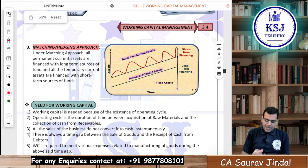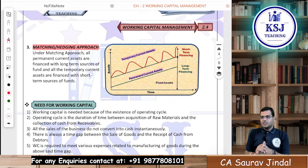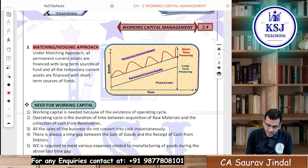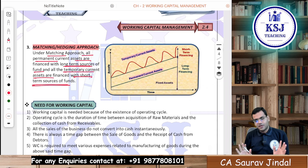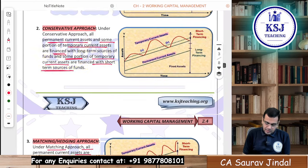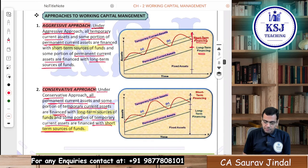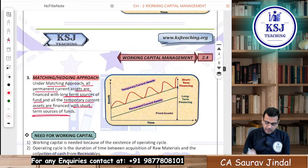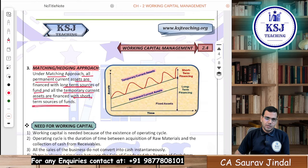Then there is the matching or hedging approach — it is in between aggressive and conservative, a balanced approach. Under the matching approach, all permanent current assets are financed with long-term sources and all temporary current assets are financed with short-term sources of funds. These are the three approaches — aggressive, conservative, and matching/hedging — which you should know for theoretical purposes.